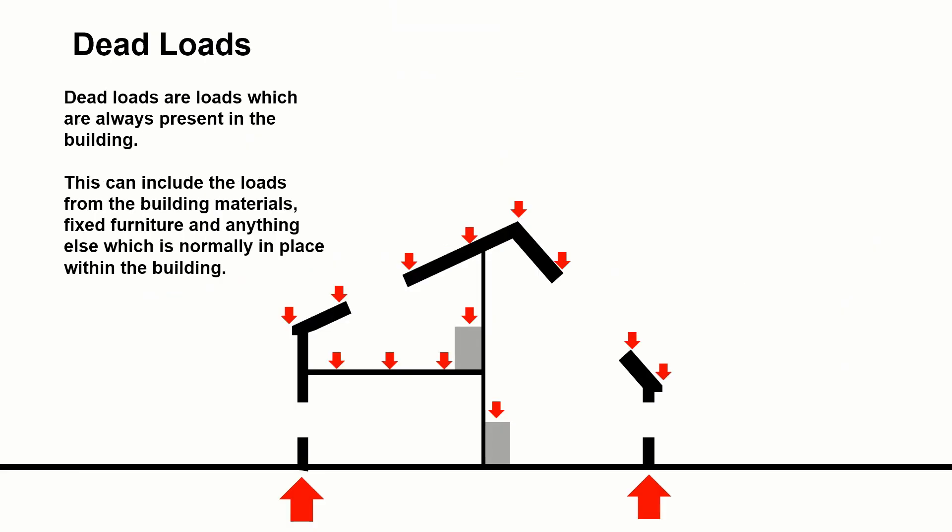When we talk about loads, what are we talking about? We can categorize them in a number of ways. The first category that we can think of are dead loads. These are loads which are always present within the building. It could be the weight of a roof, the materials on the roof, timbers to make it up, insulation.